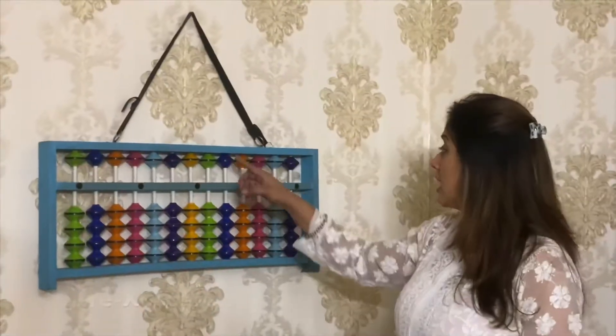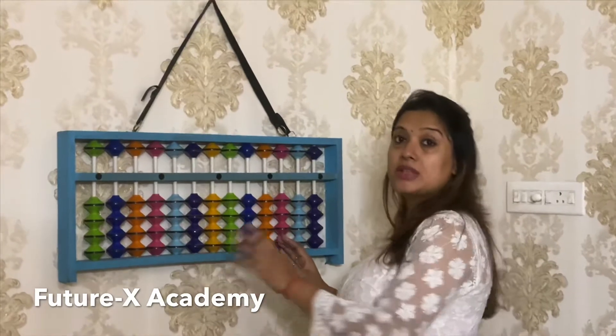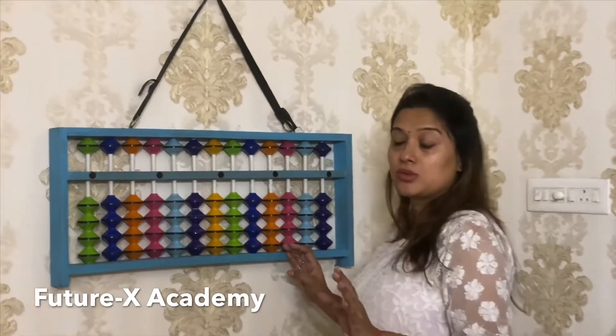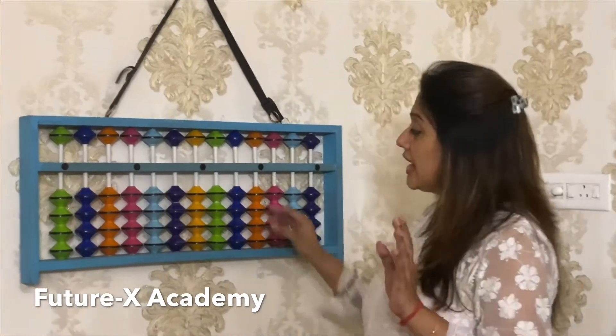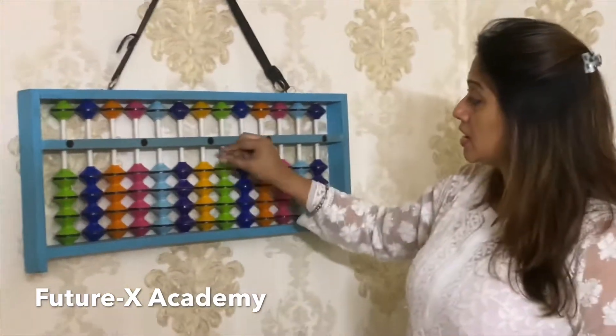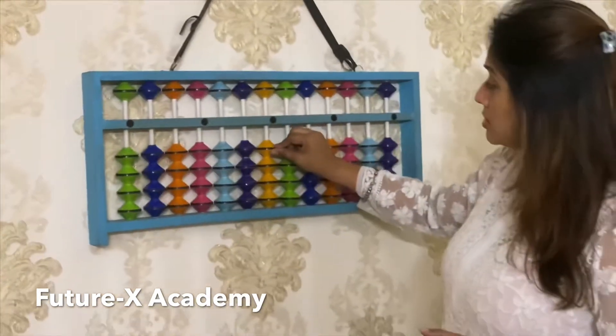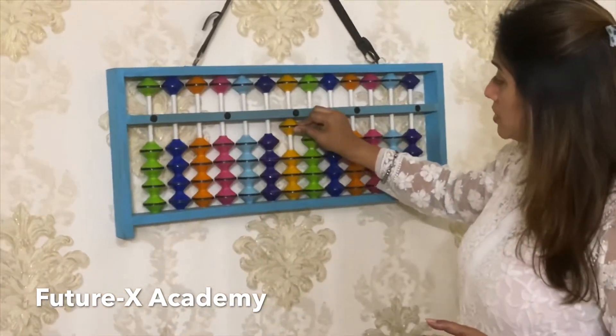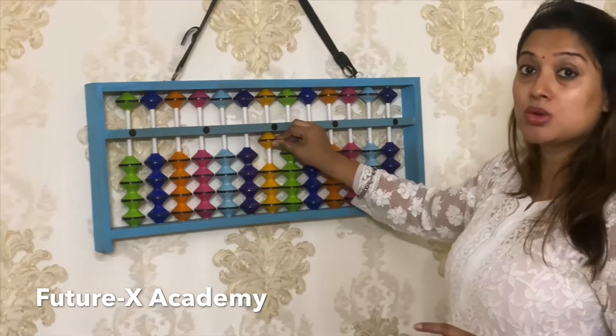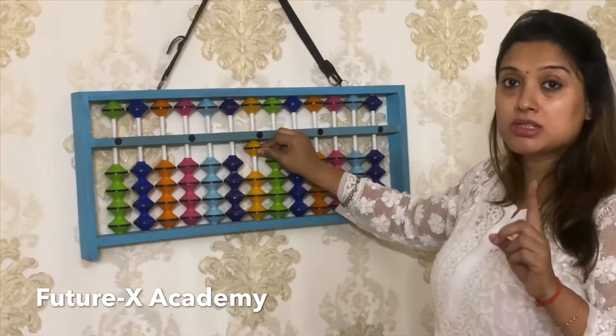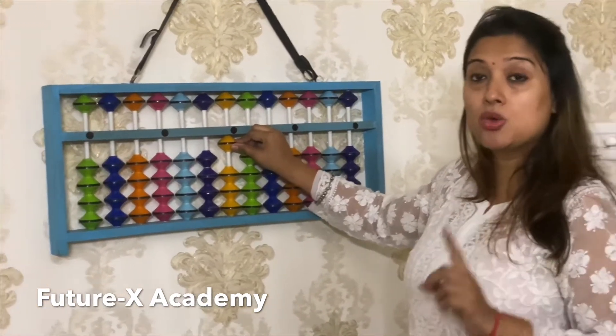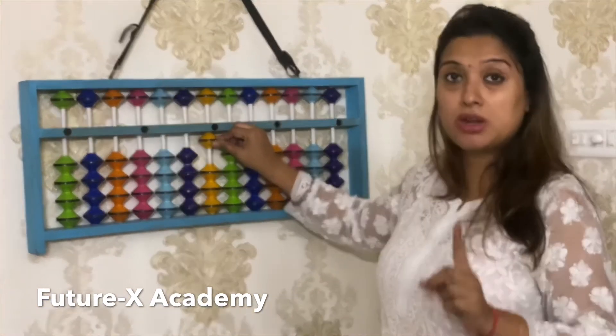Today you will learn the value of bits. Our abacus value starts at 0. When any bit touches the divider, only then will the value increase. So when this bit is touching, the value is 1. As I said, lower bits each have a value of 1.